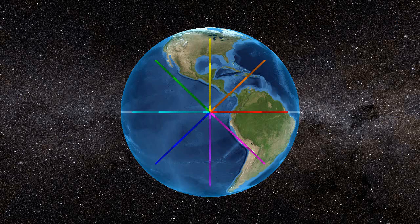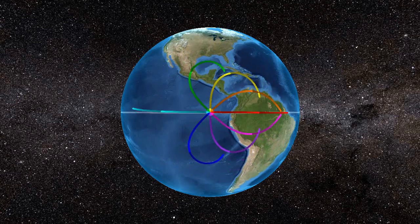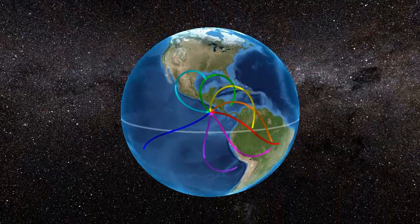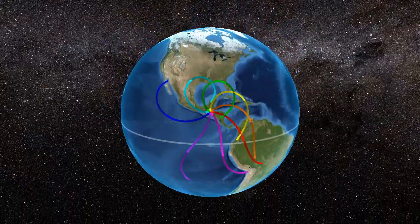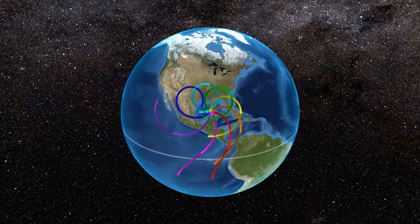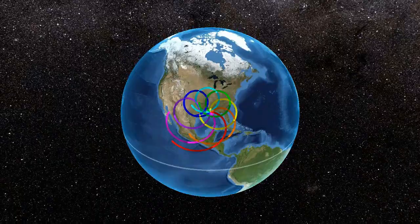Now let's see what happens when I apply the Coriolis effect to the simulation. Notice how the deflection changes the shape of the paths. As we move towards the North Pole, notice how the paths curl tighter and tighter inwards. This is because the Coriolis effect strengthens as we get near the poles, and weakens as we get near the equator.